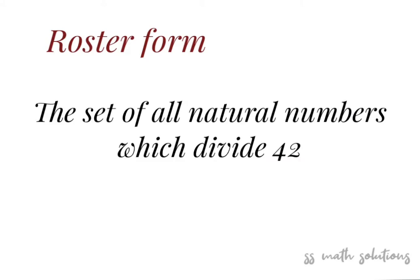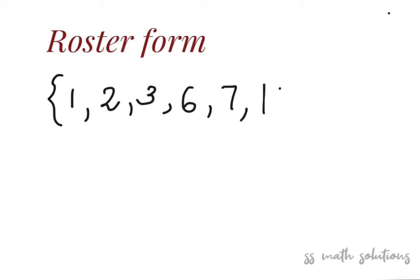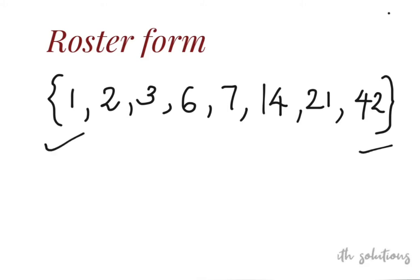For the roster form, I am telling one example: the set of all natural numbers which divide 42. The numbers that divide 42 are: 1, 2, 3, 6, 7, 14, 21, and 42 itself. Within curly brackets we write the set members — that is called the roster form.